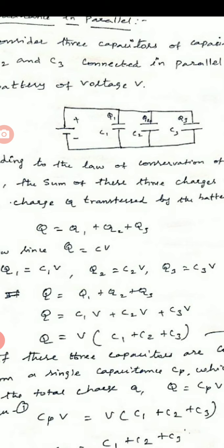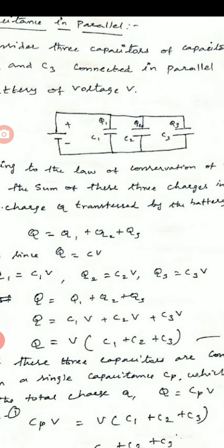Since corresponding sides of the capacitors are connected to the same positive and negative terminals of the battery, the voltage across each capacitor is equal to the battery's voltage. Since the capacitances of the capacitors are different, the charge stored in each capacitor is not the same.